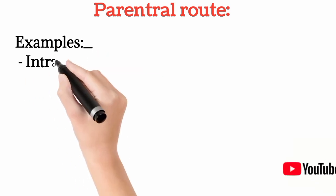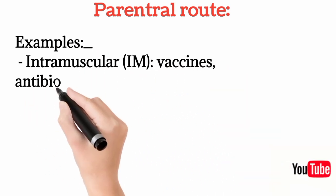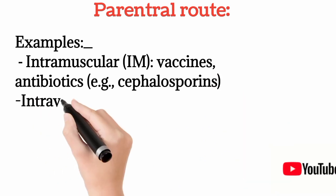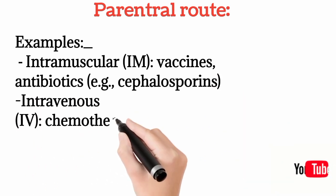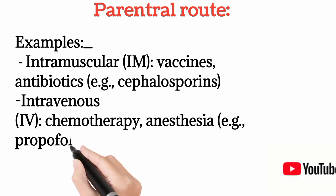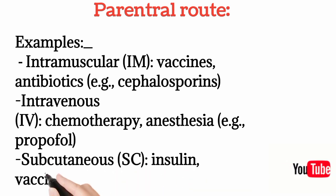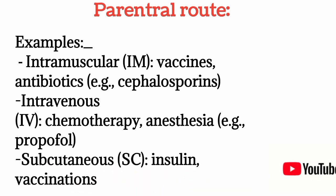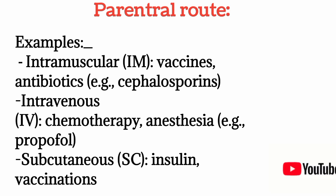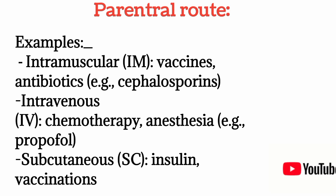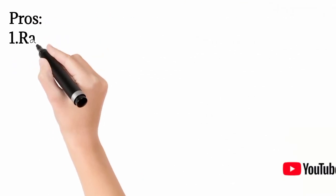Then we have the parenteral route, which simply means the injectable route. You have various injectable routes — for example, the intramuscular route, where drugs are injected into the muscles; various vaccines and antibiotics can be given this way. Through intravenous routes, various drugs can be given, for example chemotherapy drugs and anesthesia drugs. Through the subcutaneous route, the injection is given just beneath the skin — for example, insulin is commonly given subcutaneously, and various vaccinations can also be given this way.